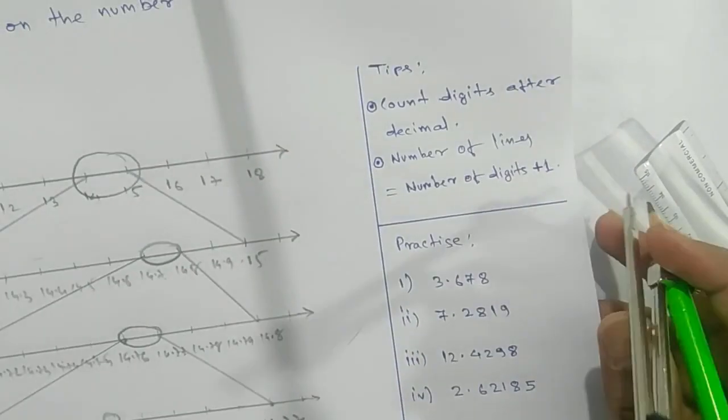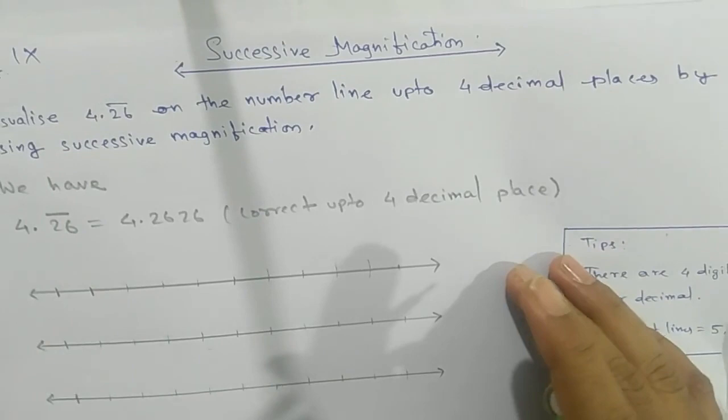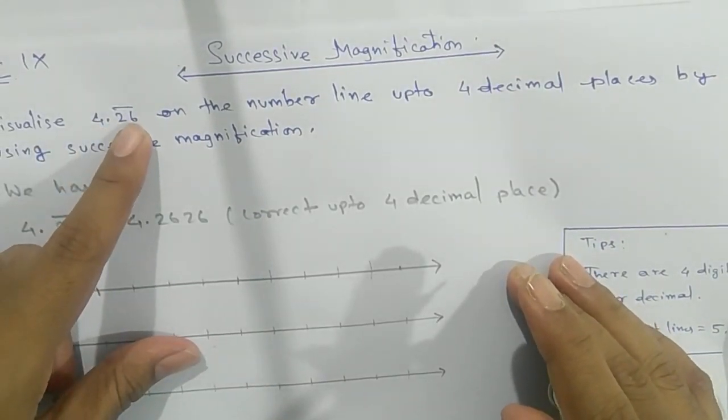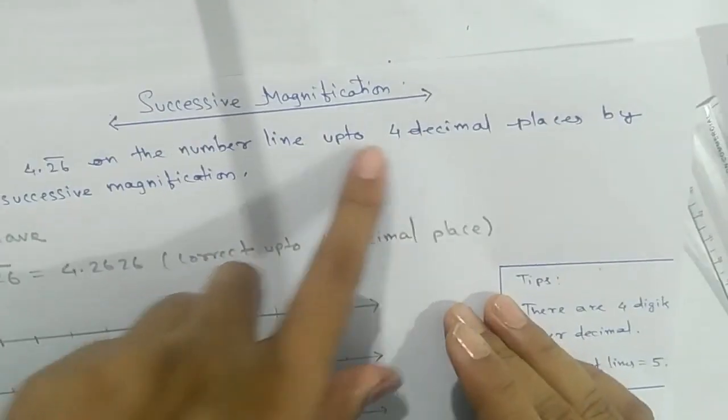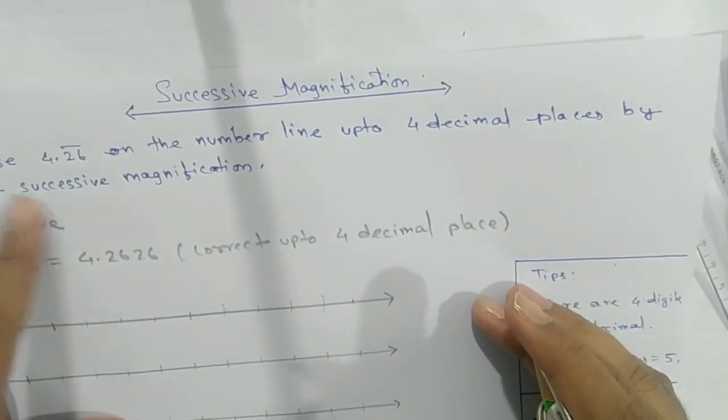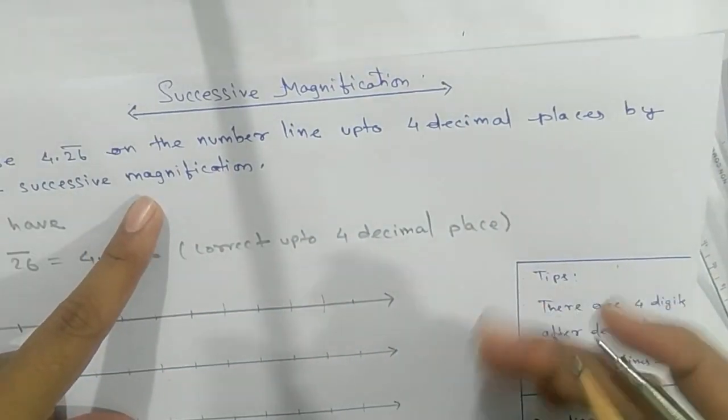We have one more question related to this. Visualize 14.26 bar on the number line up to four decimal places by using successive magnification.